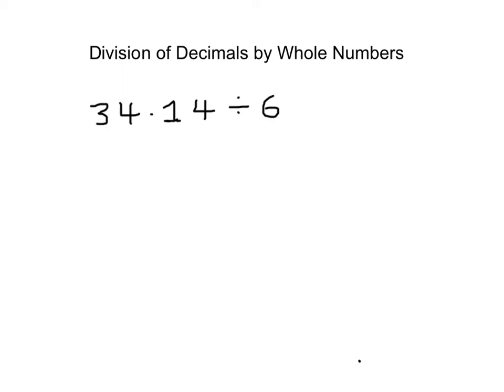Dividing a decimal by a whole number is almost exactly the same as dividing a whole number by a whole number. In this case, I want to divide 34.14 by 6.